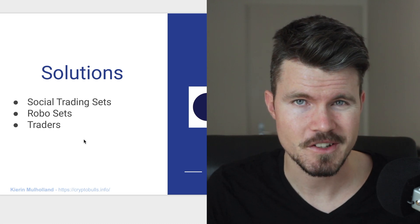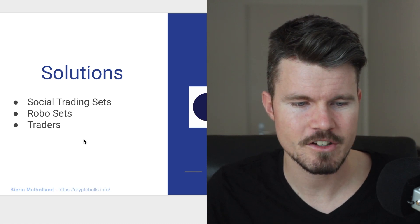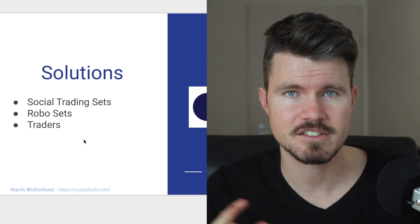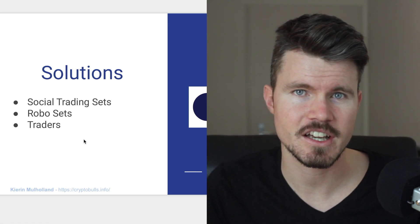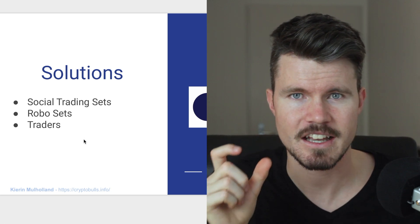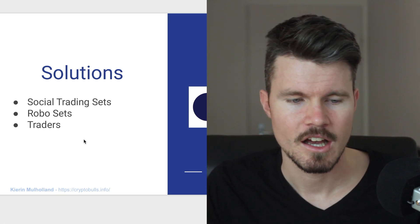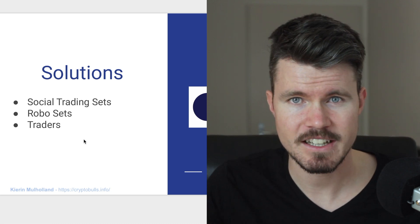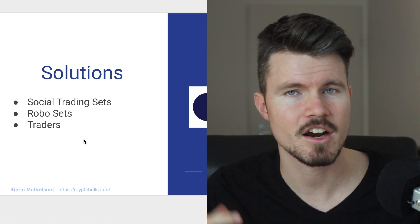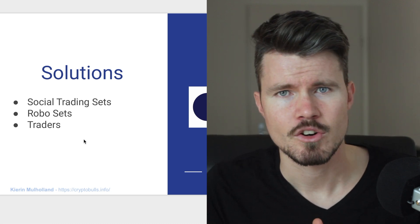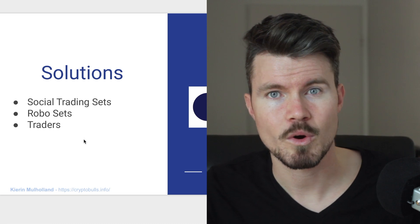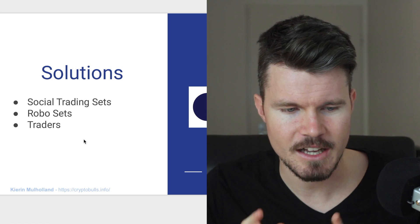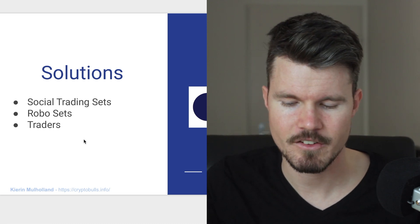The solutions on Set Protocol are as follows: you've got social trading sets where traders create their own sets based on different indicators and you can buy those trading strategies as an ERC20 token. Then you've got robo sets which are predefined algorithmic trading sets such as moving average and RSI. And then you've got traders you can copy trade and see what sets they're buying to get an impression of what you might want to buy.